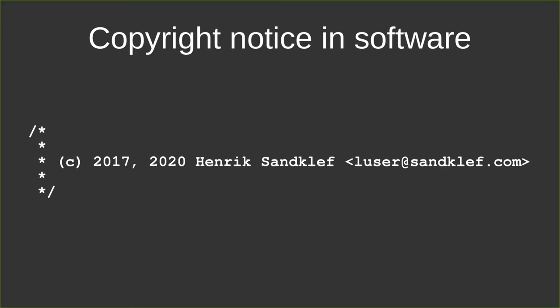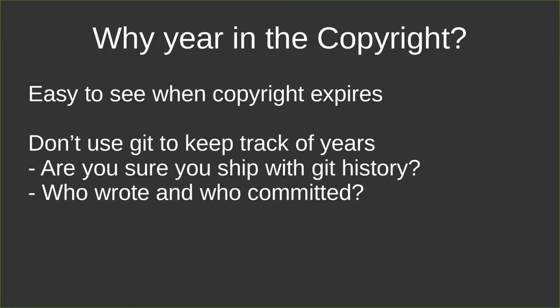So why do I have 2017 there? For history. It's common practice to list the years in which you made a release. A lot of people say you could use Git to keep track of the years, but if you make some kind of release and then zip or tar-zip something, the Git history is gone. So I would say, don't use Git to keep track of the years - put it in the header section somewhere, so it's easy to see when the copyright expires and who has the copyright.